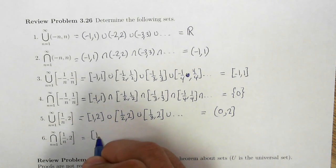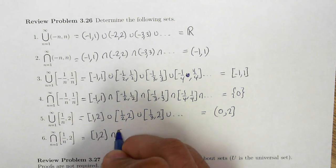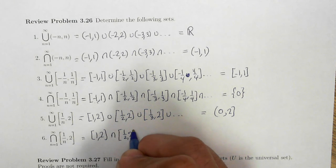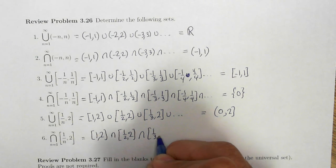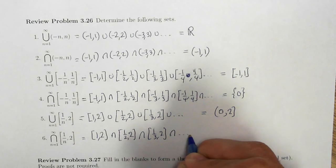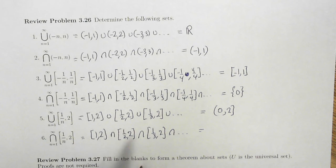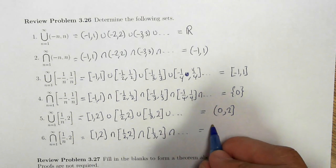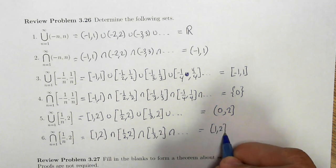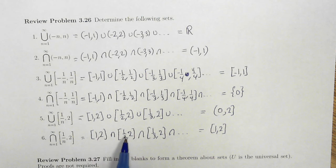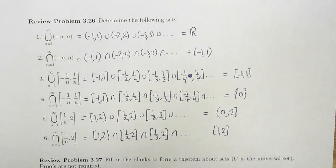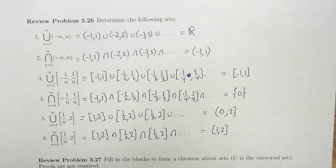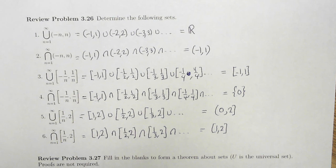Lastly, we have 1 to 2, intersect 1/2 to 2, intersect 1/3 to 2, and so on. The sets are getting progressively larger, so the intersection will simply be the closed interval [1, 2]. One will be an element of all of these sets, 2 is an element of all these sets, and everything in between 1 and 2 will be an element of all those sets. So the infinite intersection will be the closed interval from 1 to 2.